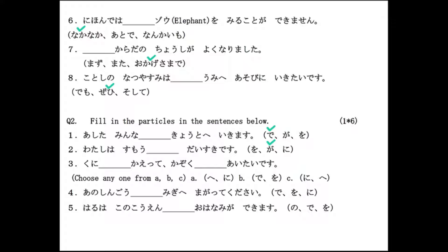The third sentence is 'Kuni ___ kaette kazoku ___ aitai desu.' The particle e shows direction, so it will be 'kuni e kaette,' and since ni is used with the verb aimasu, the sentence becomes 'Kuni e kaette kazoku ni aitai desu.' The fourth sentence uses particle o, which denotes the place where a movement verb's action occurs: 'Ano shingo wo migi e magatte kudasai.' The fifth sentence uses de, indicating the place where the action occurs: 'Haru wa kono kouen de ohanami ga dekimasu.'